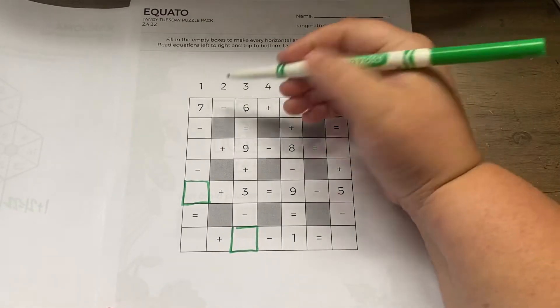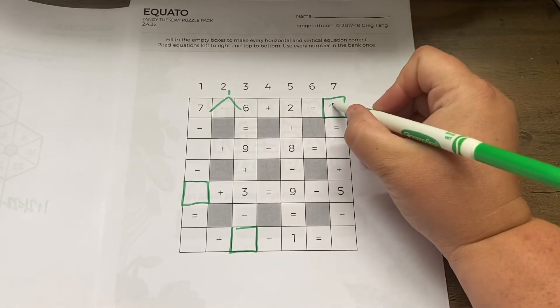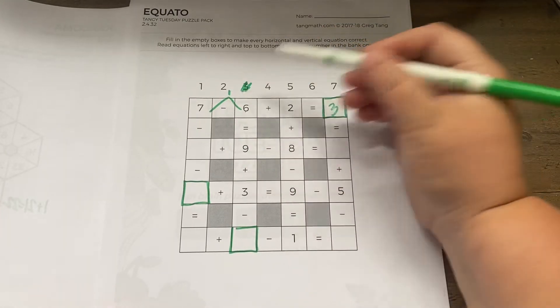7 minus 6 is 1, plus 2 is 3. So that one has to be 3.